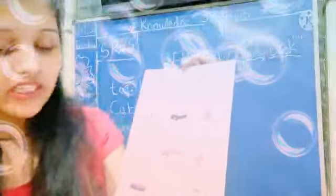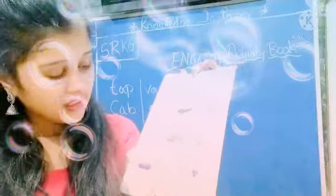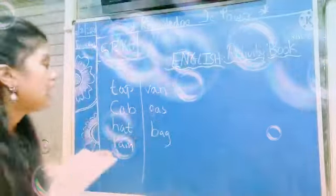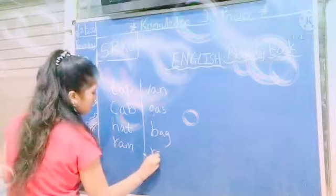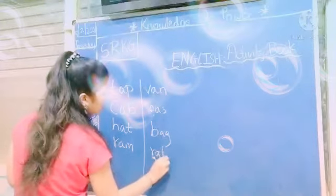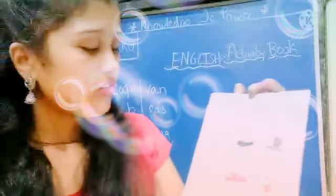Now next picture is what? RAT. So what you will write? R-A-T, RAT. What you will write? R-A-T, RAT.